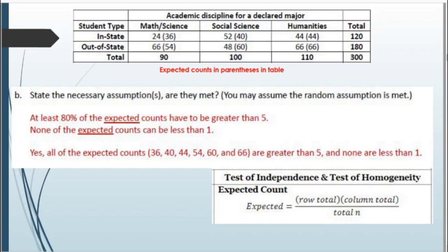Note that if the expected counts weren't given, you can find them using the formula on our formula card. For an independence type test, the expected count equals the row total multiplied by the column total divided by the total n. For example, for math and science in-state: 120 times 90 divided by 300 gives the expected count of 36.